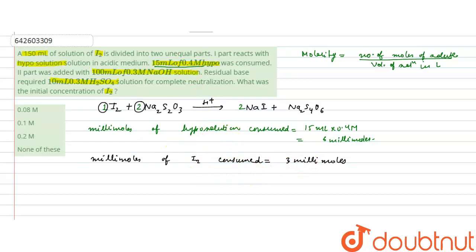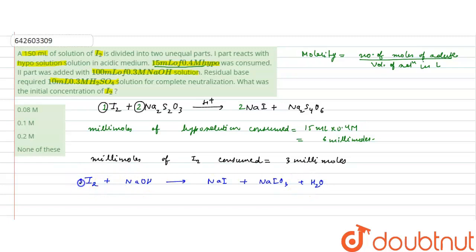When the second part reacts with NaOH, the disproportionation of iodine occurs: I₂ + NaOH forms NaI and NaIO₃ plus water. This is the balanced disproportionation reaction. NaOH consumed is 100 mL of 0.3 molar NaOH, and the residual base required 10 mL of 0.3 molar H₂SO₄ for complete neutralization.